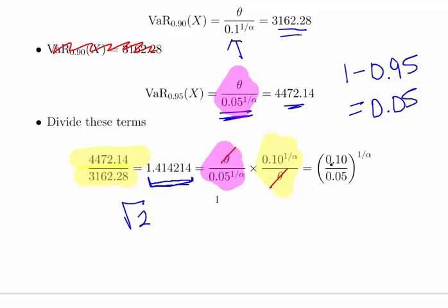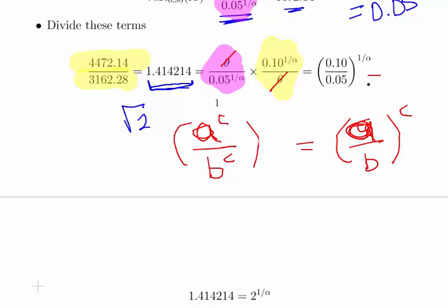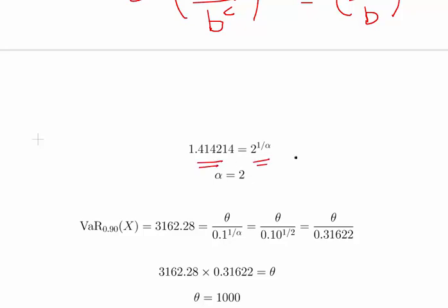So what we're left with is 0.10 divided by 0.05 to the power of 1 over alpha. Just as a quick remark, A to the power of C divided by B to the power of C equals A divided by B to the power of C. So essentially that works out to be 2 to the power of 1 over alpha, and we guess that that is going to be very close to the square root of 2. It is. So that is the square root of 2, so that means alpha equals 2.